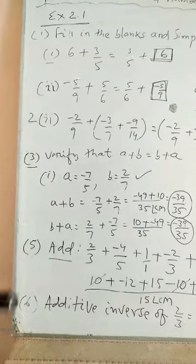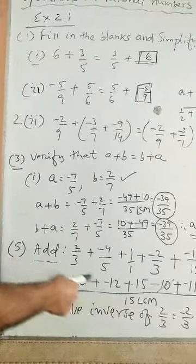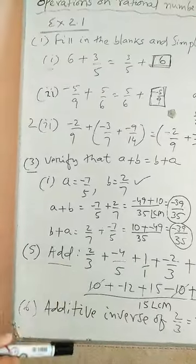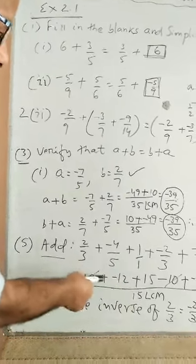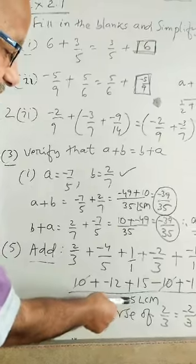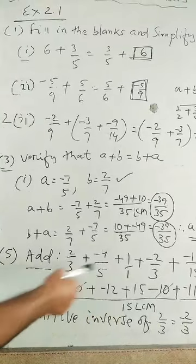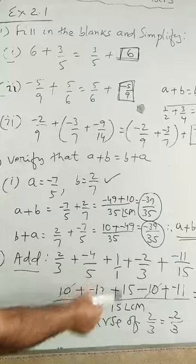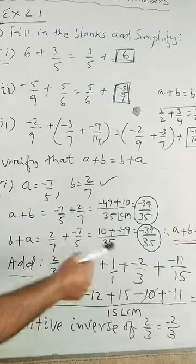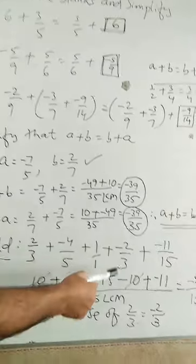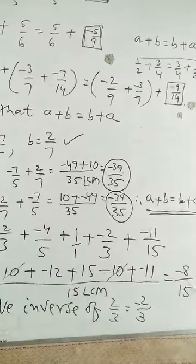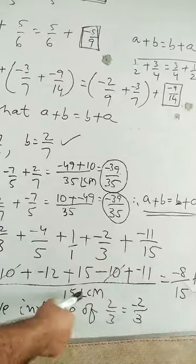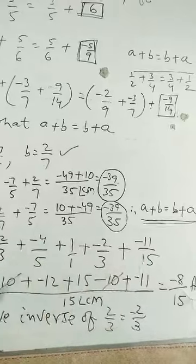Now, simplify this. How to simplify? 15 is divisible by 3. So, 3, 5's are 5 into 2 is 10, plus 5 into 5, 3's are 3 into minus 4 is minus 12, plus 1, 15's are 15 into 1 is 15, plus 3, 5's are 5 into minus 2 is minus 10, plus 15, 1's are 1 into minus 11 is minus 11.